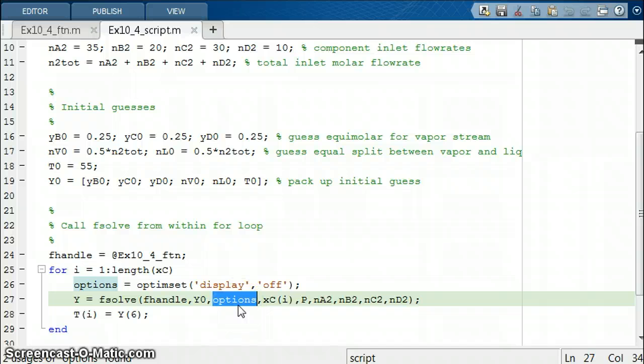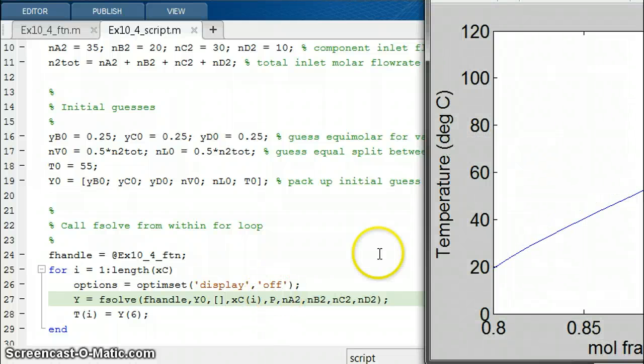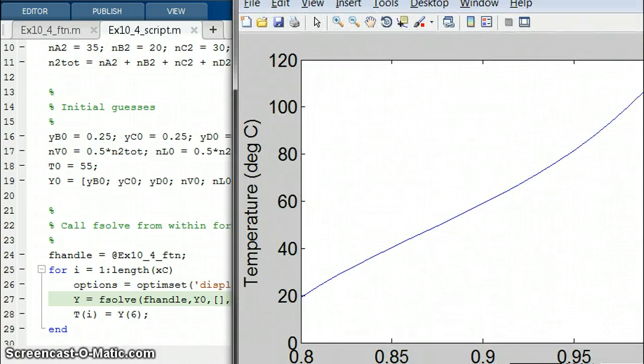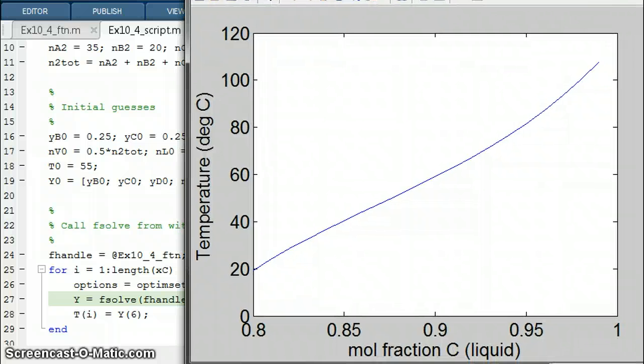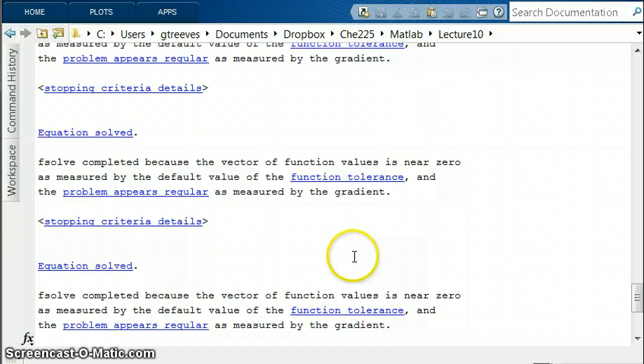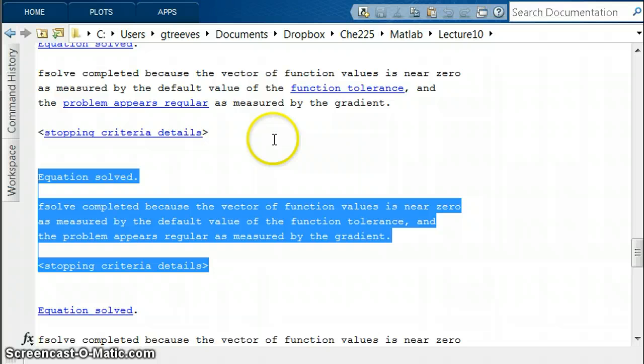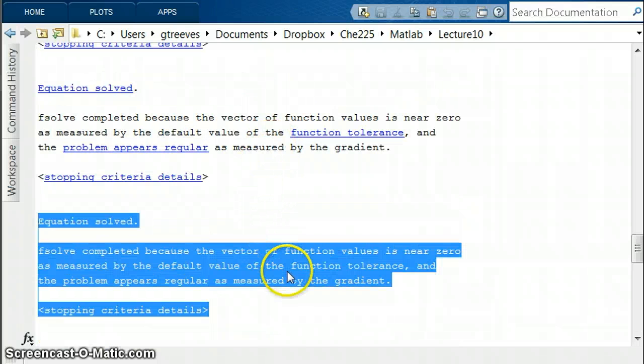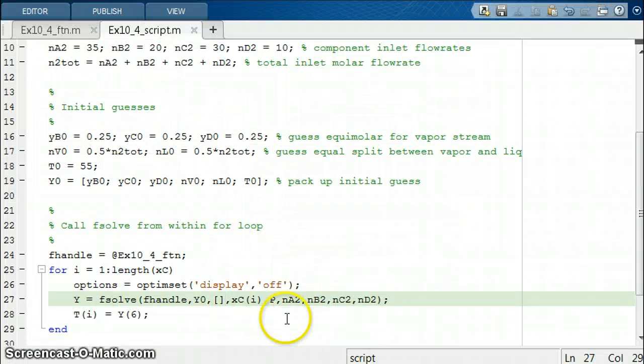Let me go ahead and run this and show you what it looks like with just empty brackets as a placeholder. I'm going to run this script. When the plot pops up first of all, and when we look at our MATLAB command window, what we see is that for every single time it ran through the for loop, it spit out this junk, which we don't even need to see every time. That's why we run this options where we make the display be off.